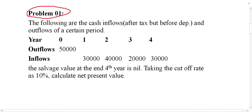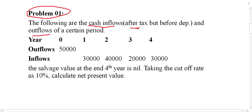Let us take a simple example for NPV or net present value. The following are the cash inflows, inside the bracket after tax but before depreciation, and outflows of a certain project. The cash inflow and outflows are given. This information is very important: the inflow from this project is after tax but before depreciation. So if it is after tax and before depreciation, there is no need for adjustment. It's straightforward — put it in the formula and get the answer.